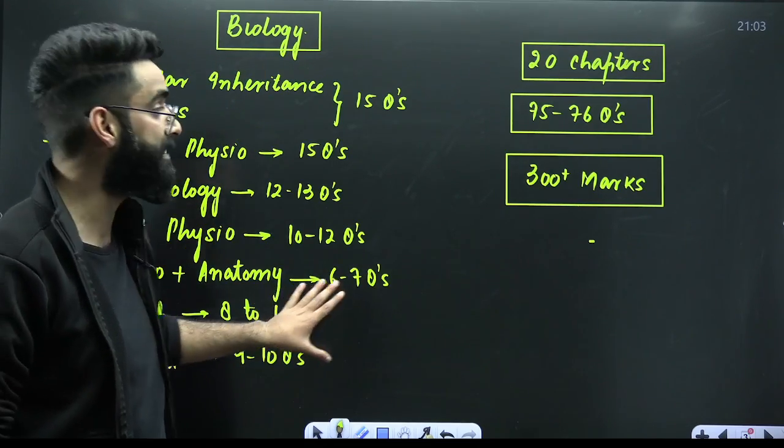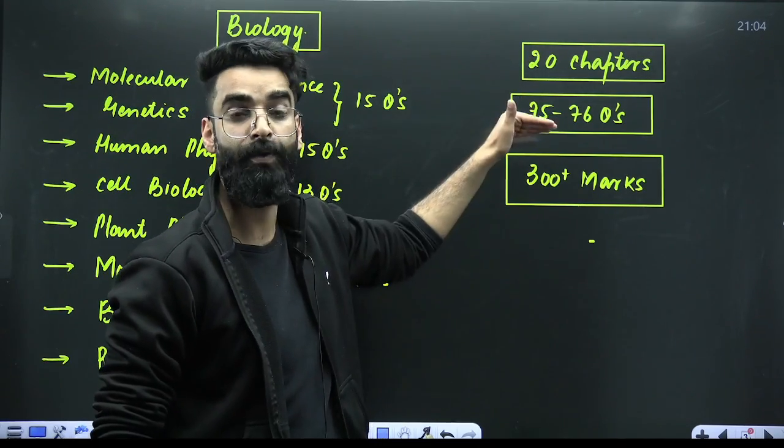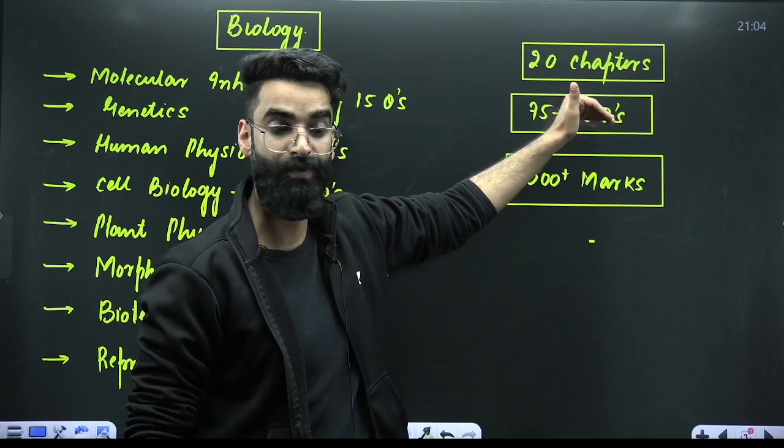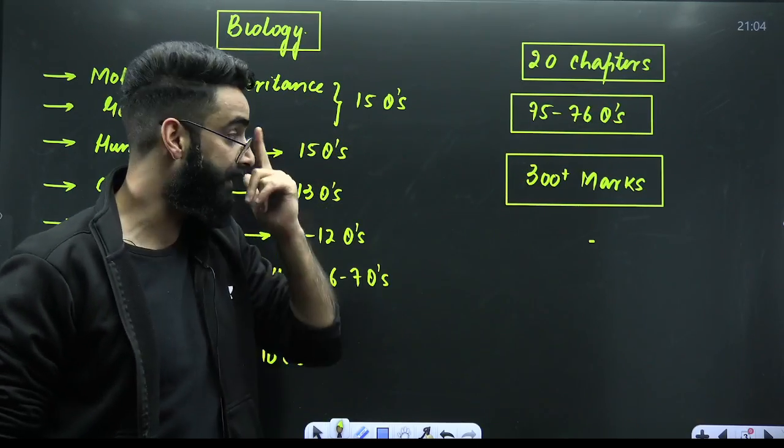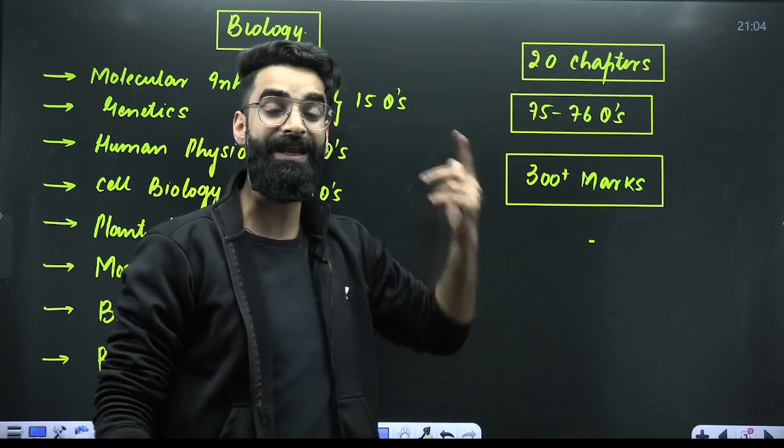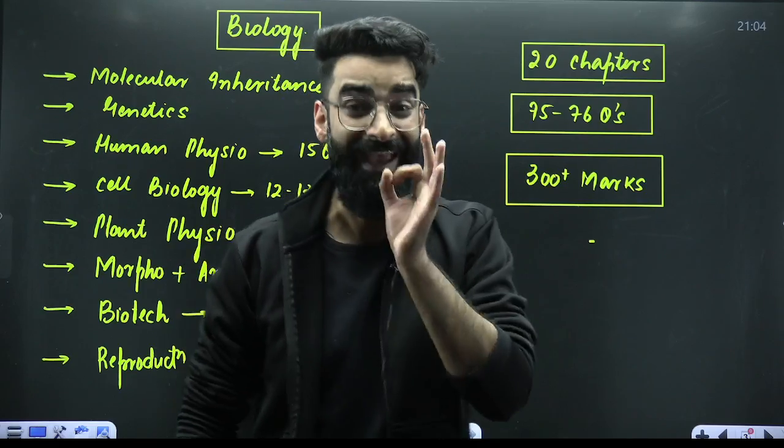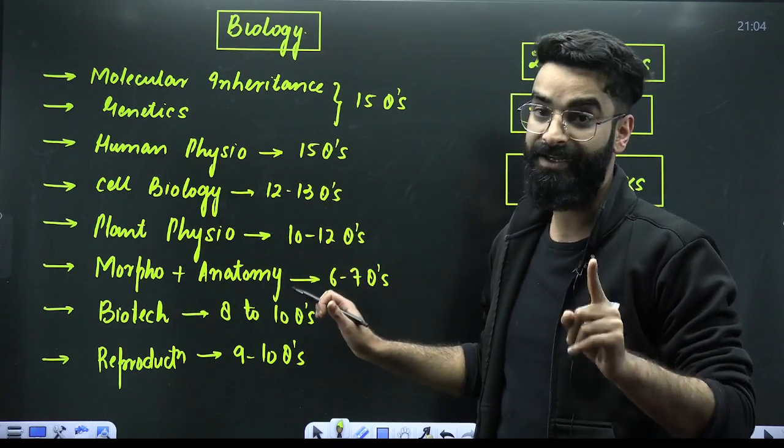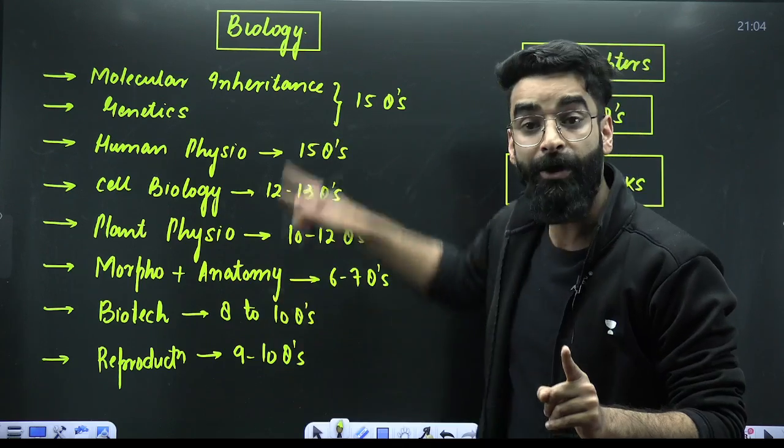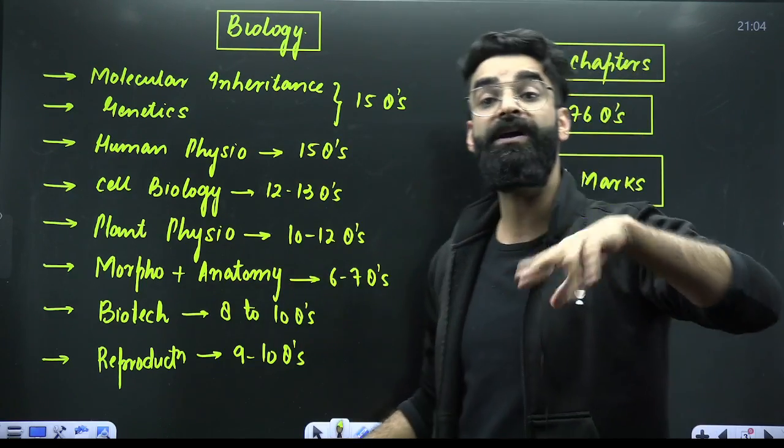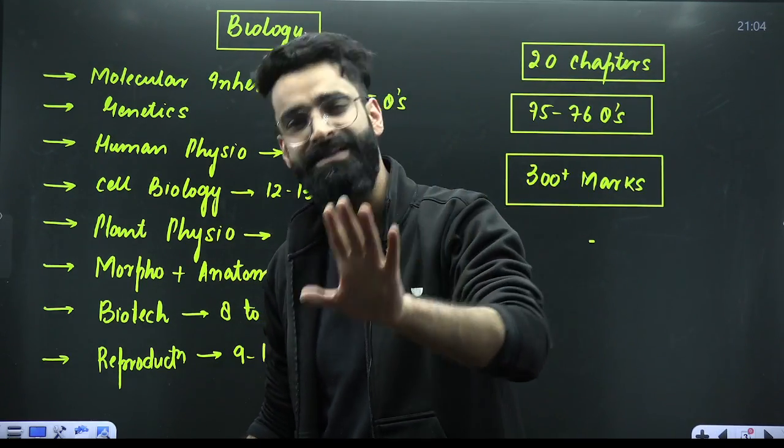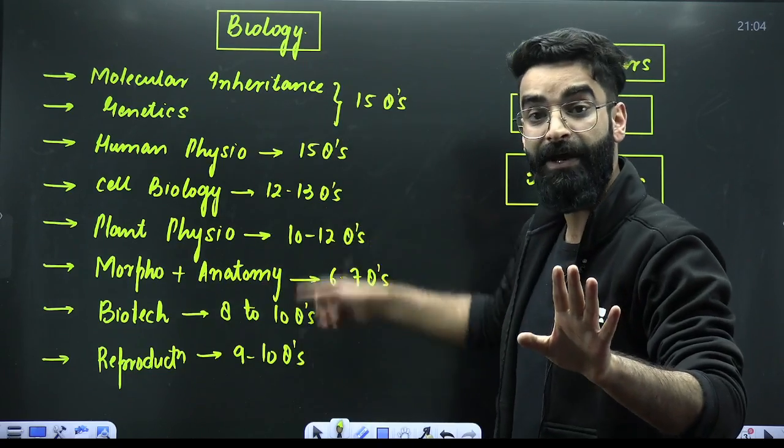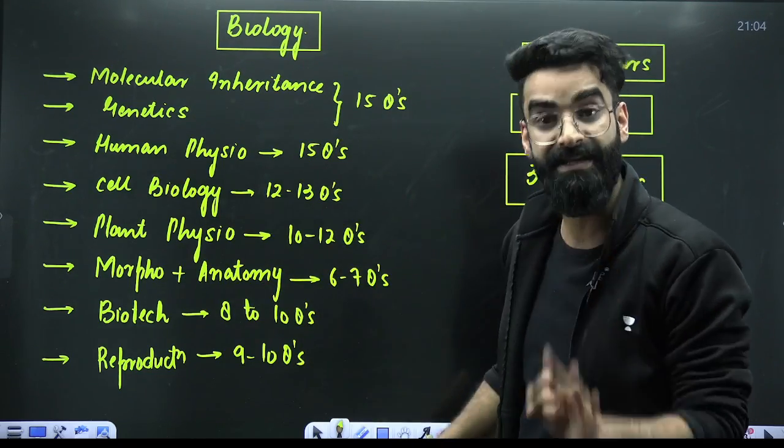In total, these are 20 chapters approximately from which you guys are going to get 75 to 76 questions for sure in your upcoming NEET 2024. And my dear students, you can easily score 300 plus marks in biology if you do only these units. But again I am telling you, prioritize these units but do not avoid the other units.